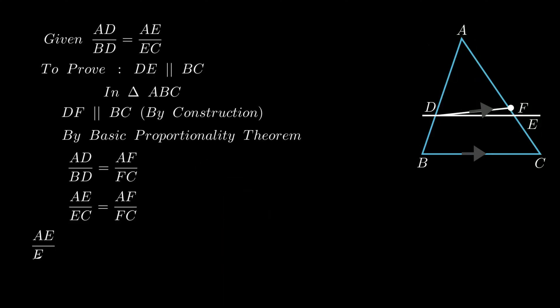Therefore on adding 1 to both the sides of this equation we get AE upon EC plus 1 equals AF upon FC plus 1.